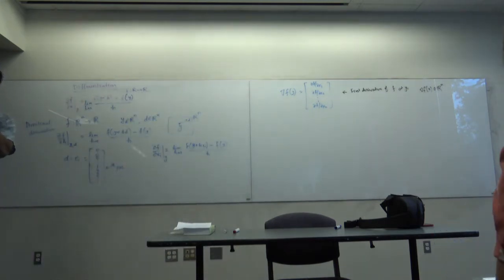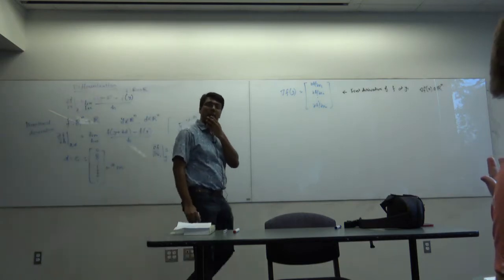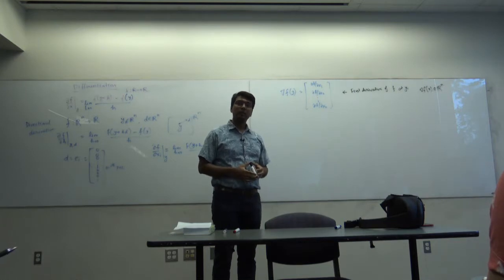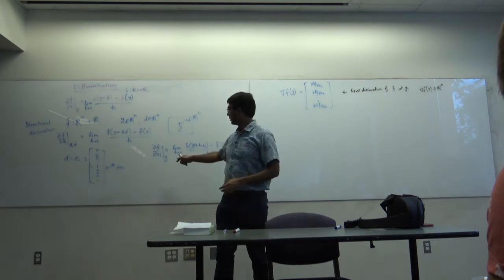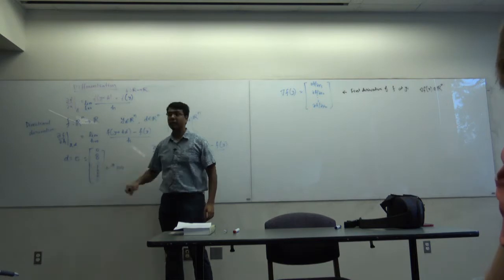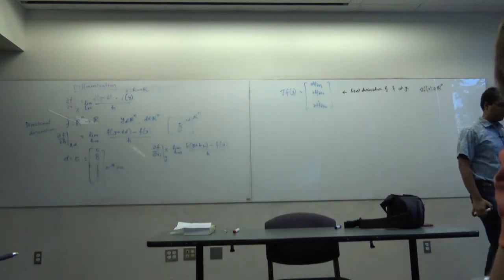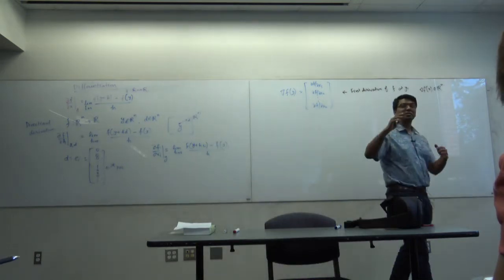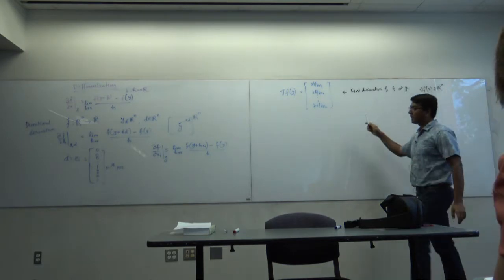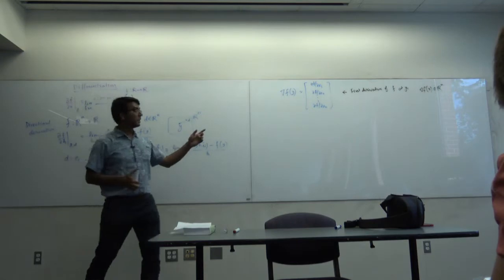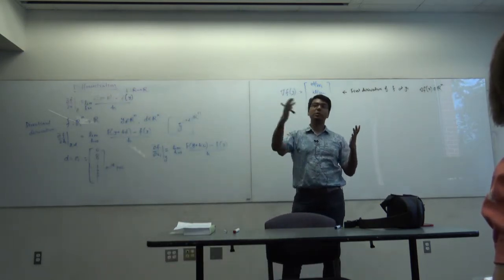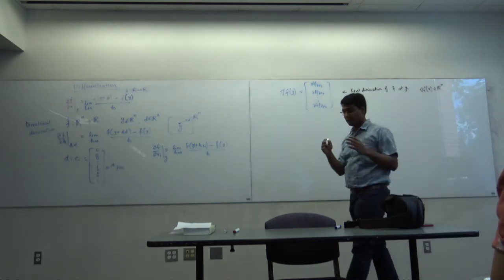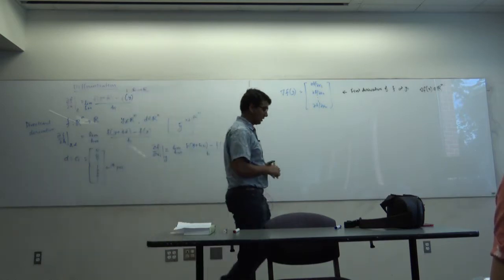A student asks if this relates to the partial derivative practice from Calc 3, where you take the derivative with respect to one variable keeping the rest constant. Yes — you're only moving along one direction, it's the same thing. When teaching Calc 3, not all information can be revealed at once. If you take higher-level math courses, you'll find that the derivative actually lies in what is known as the dual space of the original space, but in Euclidean space the dual space is the space itself, so that structure is somewhat hidden.